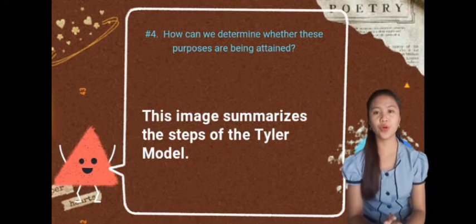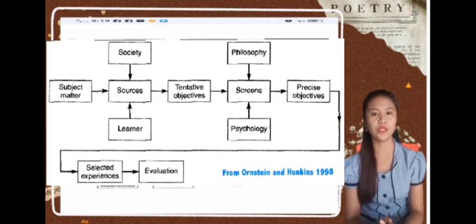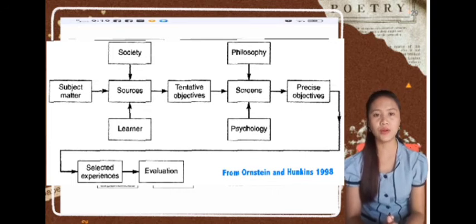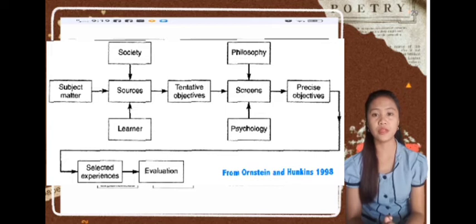Moving on to number four: How can we determine whether these purposes are being attained? As you can see on the screen, there is a diagram that summarizes the steps of the Tyler model. The Tyler model is one of the best-known models for curriculum development, known for the special attention it gives to the planning phase. Tyler recommends that curriculum planners identify general or tentative objectives by gathering data from three sources: the learners or students, the society or contemporary life outside the school, and subject matter.